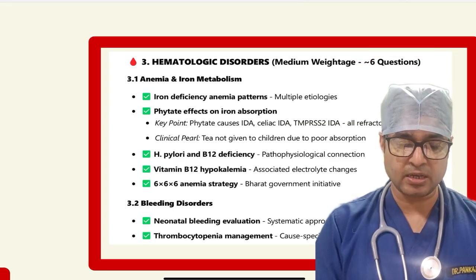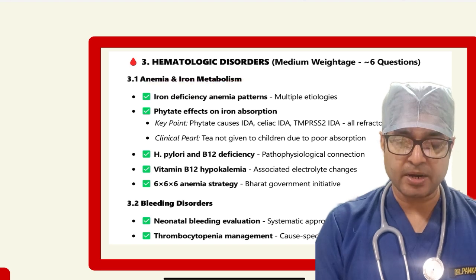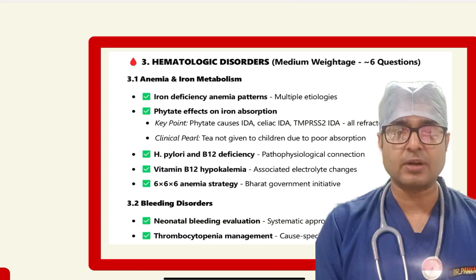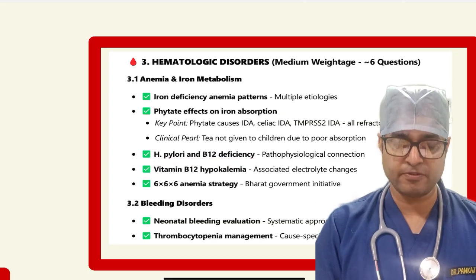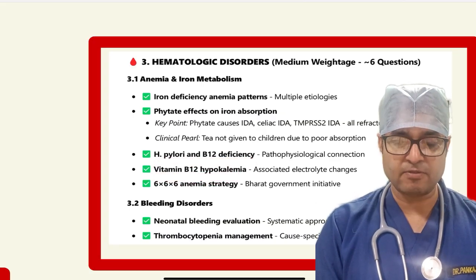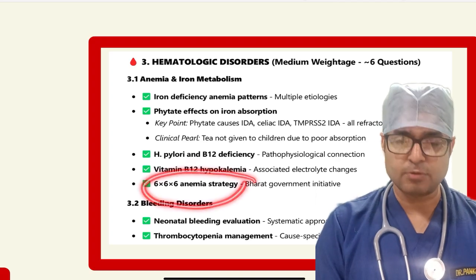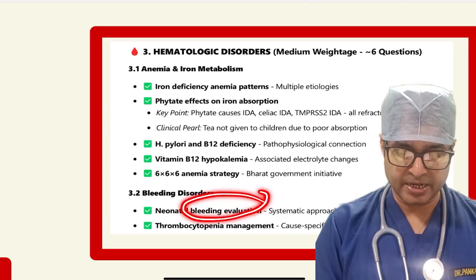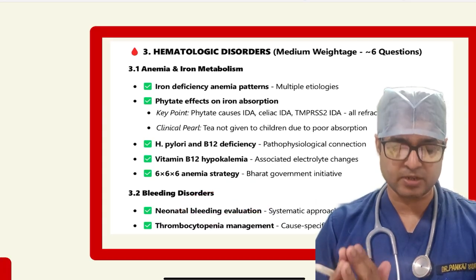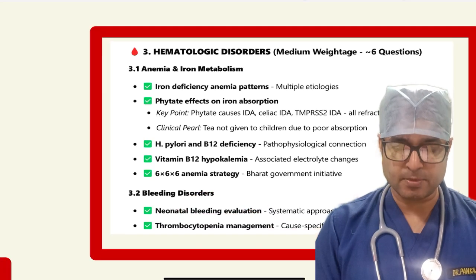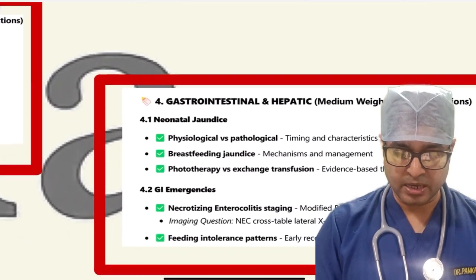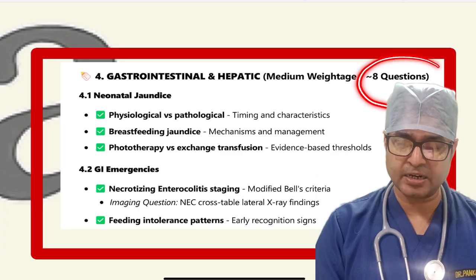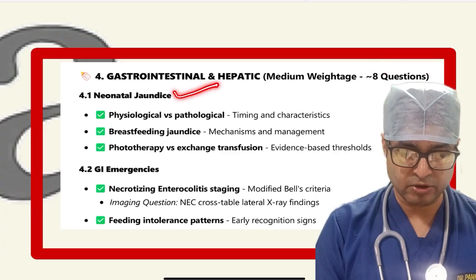Iron deficiency anemia patterns were asked, including phytate effect on iron absorption, H. pylori, vitamin B12 deficiency, and Anemia Mukt Bharat strategy. Bleeding disorders including neonatal bleeding evaluation and systematic approach were asked. Thrombocytopenia management and cause-specific treatment were included. In the GI and hepatic section, around seven to eight questions were there, mostly on neonatal jaundice — physiological versus pathological.